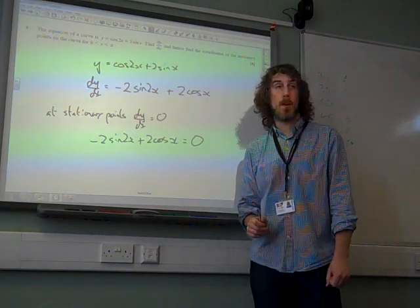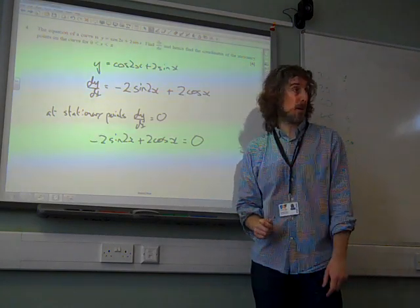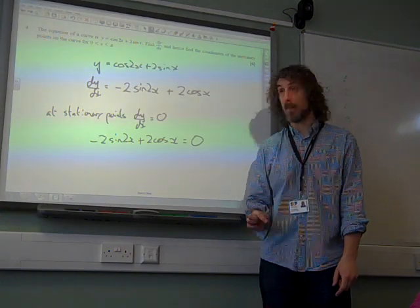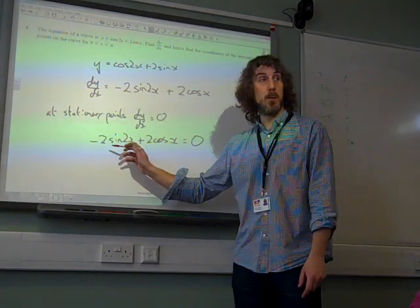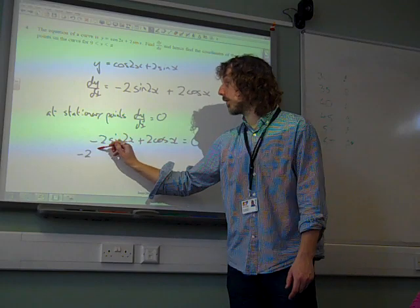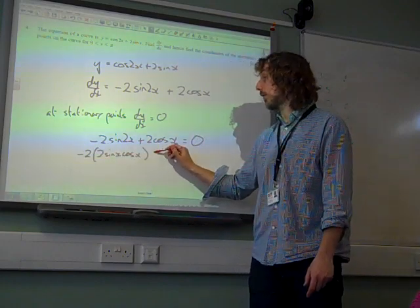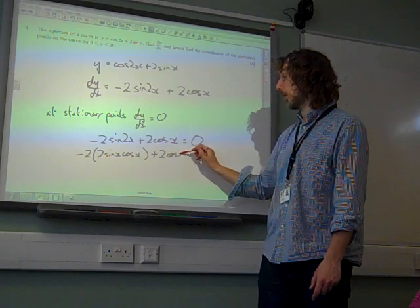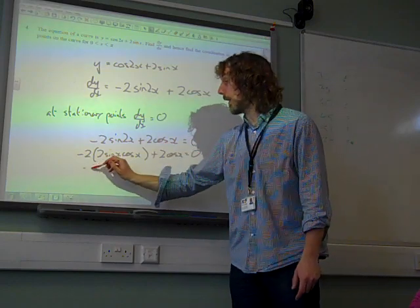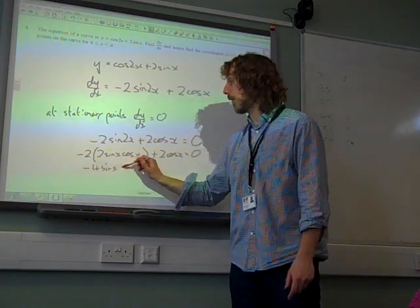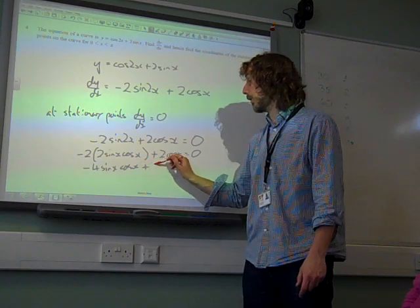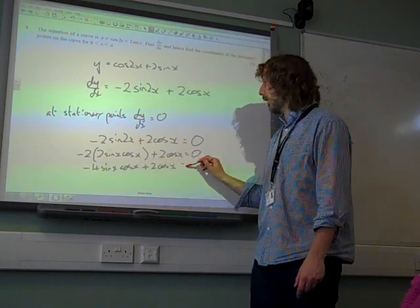But we remember from core 3, the trigonometric identities, that one that says that sine 2x is 2 sine x cos x. So we've got that. This is all looking better now. We've got minus 4 sine x cos x plus 2 cos x equals 0.